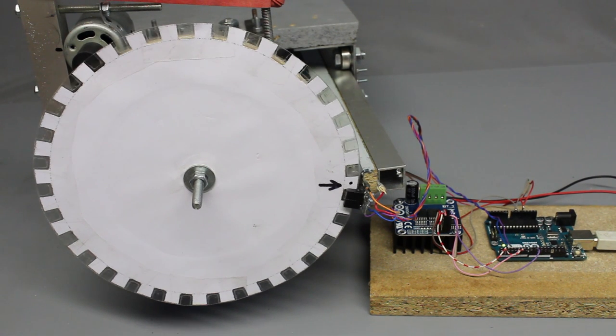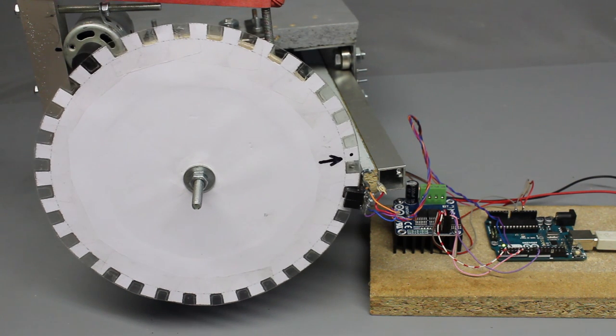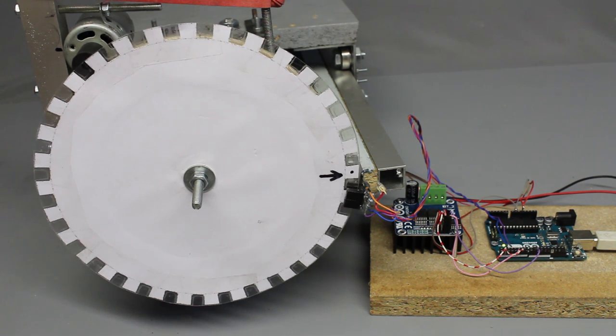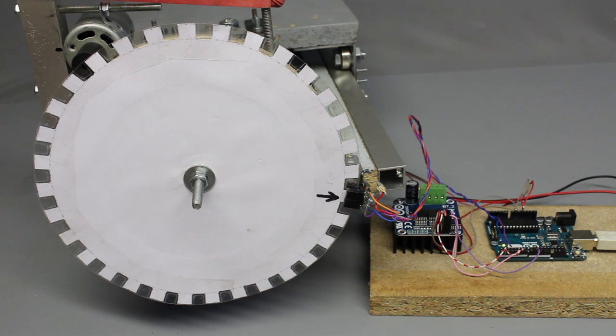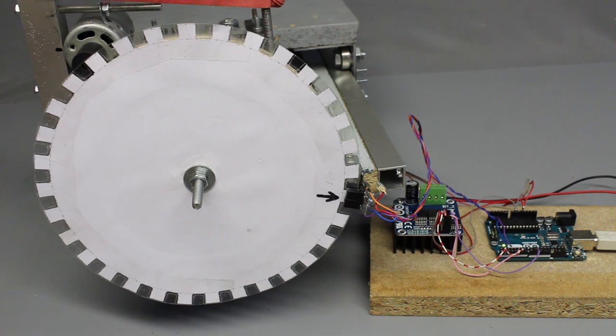The sensor disc mounted on the threaded rod has 32 teeth, thus we get 128 pulses from the light sensors each revolution. In theory the Arduino moves the carriage for 7.8 micrometers with each step.